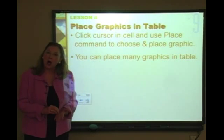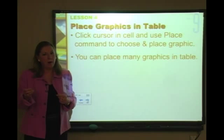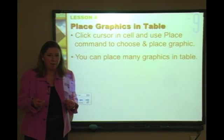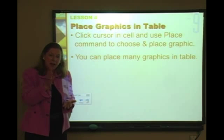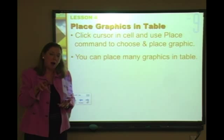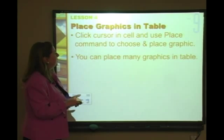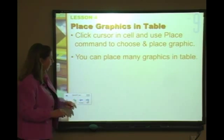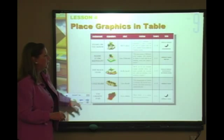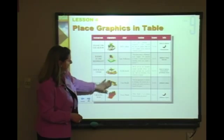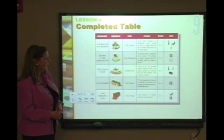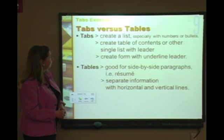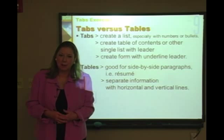We learned in Chapter 7 or 8 about anchored objects. If you bring in a graphic with the selection tool it comes in as an independent graphic. But to anchor it to text, you need an active text cursor, then go to File > Place or drag it in from the pasteboard — it becomes anchored into that text. You can place as many anchored graphics in a table as you want.